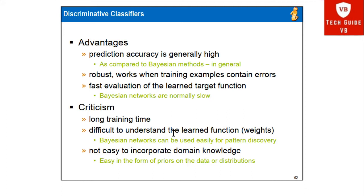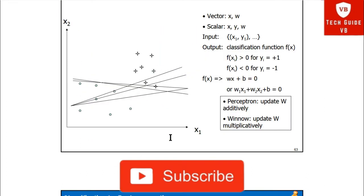The criticism points for discriminative classifiers are: it takes long training time, and it is difficult to understand the learned functions — that is, the weights — compared to Bayesian networks, which can be used easily for pattern discovery. Also, it is not easy to incorporate domain knowledge in the form of priors on the data or distribution.